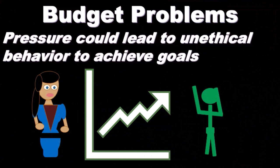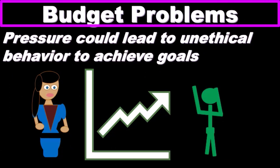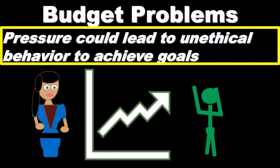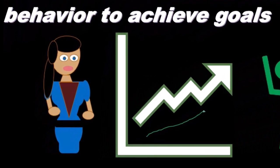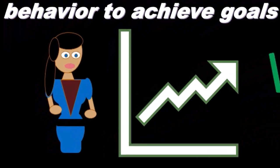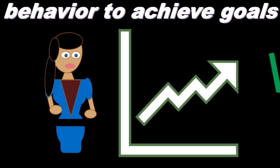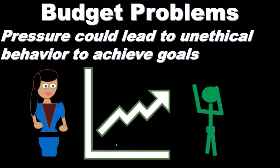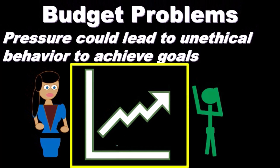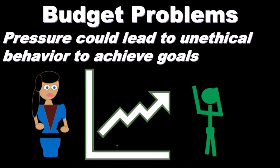Another problem inherent in the budgeting process is that we typically want to set budgeting goals that reflect a challenging growth pattern. We like to see a smooth growth trend in net sales going up in a nice, steady pattern. Another problem is that pressure could lead people to unethical behavior. We want to set the budget to a point that's difficult but still meetable, and we generally want to see a normal uptrend representing continuous improvement over time.